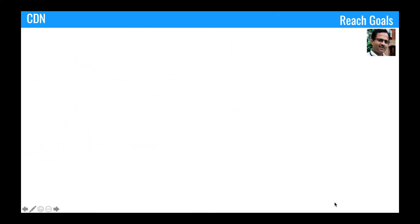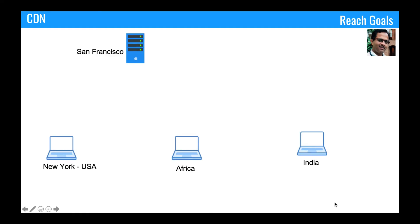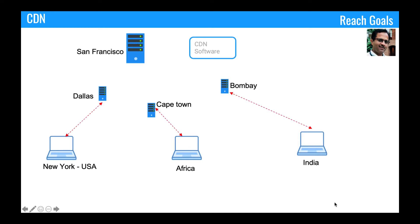In the case of CDN infrastructure, you deploy your website content into the origin server, for example San Francisco. What CDN software does is it takes the original content and pushes it to multiple CDN servers across the globe. When you request a web page, instead of it being served from the origin server, it is served from the closest CDN server. CDN servers are strategically located so that web pages are served faster and in a much better way.